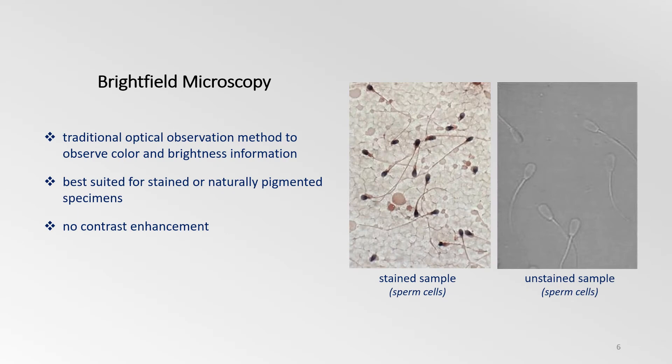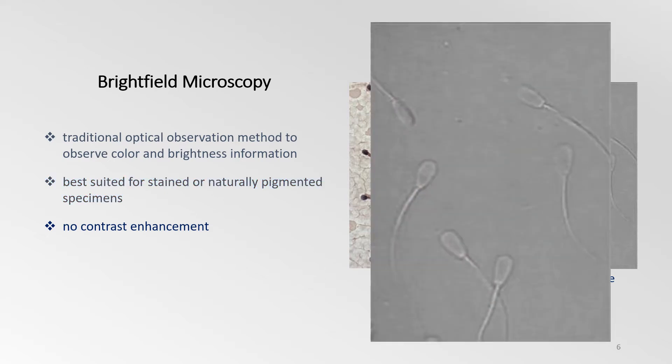Brightfield microscopy is one of the most basic and common methods used, whereby the sample is illuminated by white light that is transmitted through the sample onto the oculars or detectors. It is used to observe color and brightness information in stained or naturally pigmented specimens. It can also be used for unstained specimens, although such samples are usually difficult to observe due to the transparency of the specimen and the lack of contrast in the images acquired.